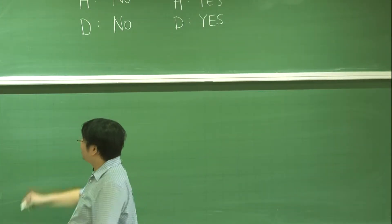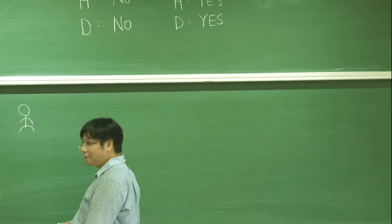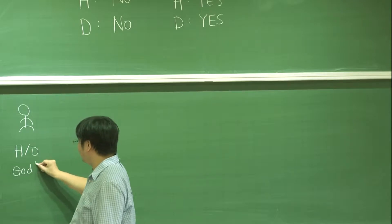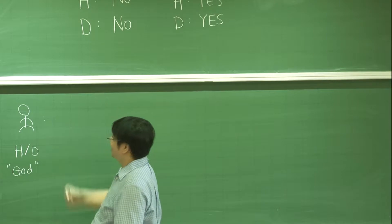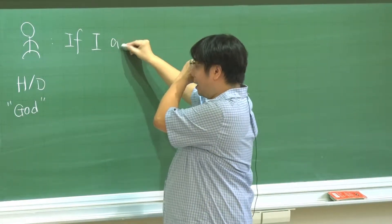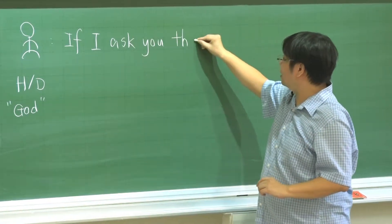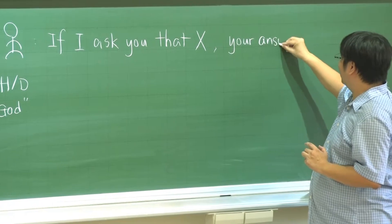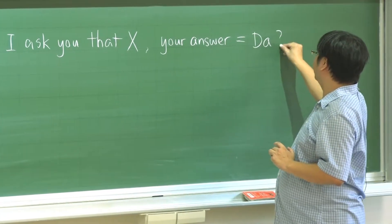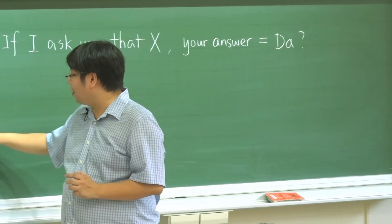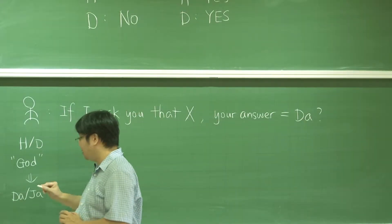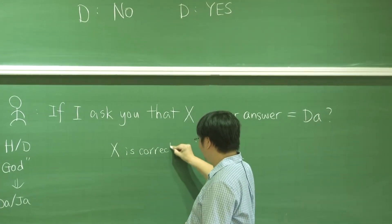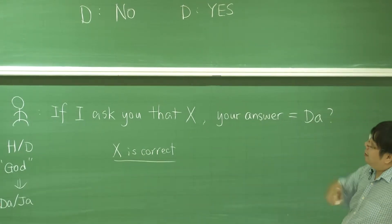Now, suppose this person is one of the gods — either honest or dishonest — but they speak 'da' or 'ja' as answers. We can use the same trick. If I ask you: 'If I ask you that x is correct, is your answer da?' — let's check what will happen if x is correct by looking at the pattern.